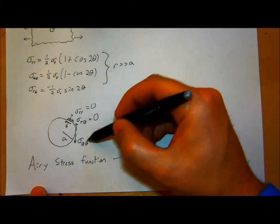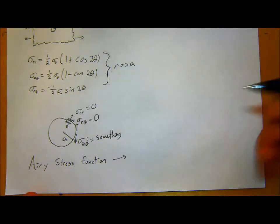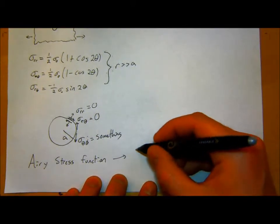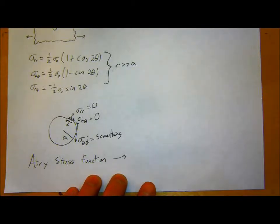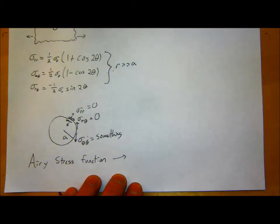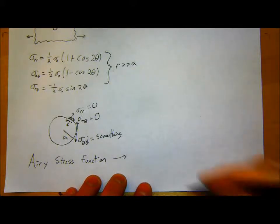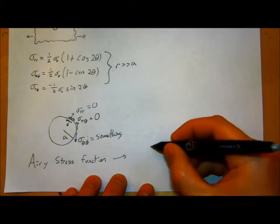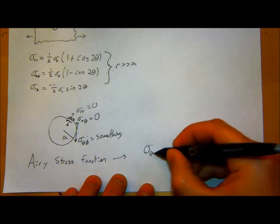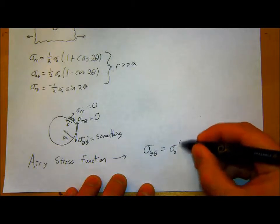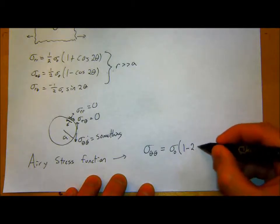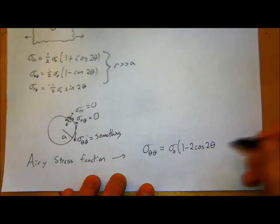The important result is the stress at the edge of the hole. Intuitively, the stress increases near the hole, and at the edge of the hole that's where the stress concentration is highest, because that's where the material is missing. The stress concentration at the hole is sigma-naught times (1 − 2 cosine 2-theta), evaluated at r equal to a.